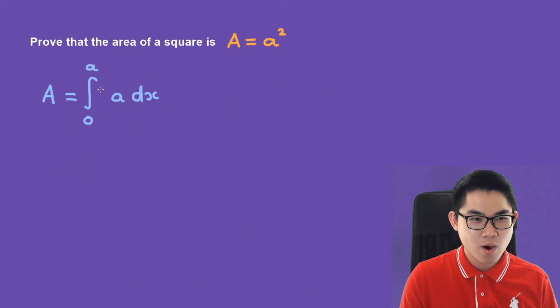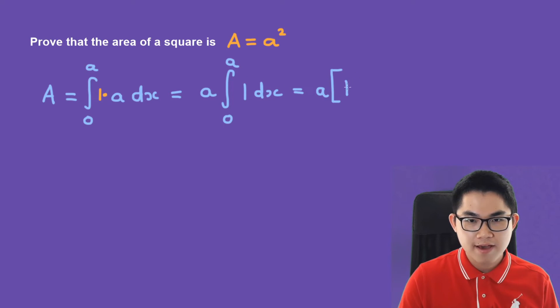You can imagine that this is 1 times a, and because a is a constant we can move it outside of the integral. So we have a times the integral from 0 to a, and then we have the 1, so 1 dx. And using the fundamental theorem of calculus we have f at a minus f at 0, where f of x is the indefinite integral.